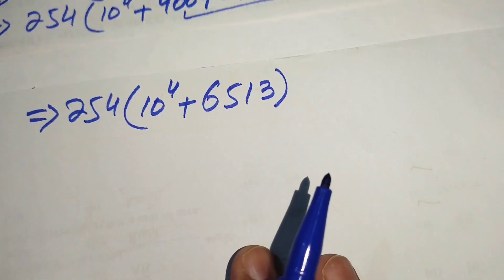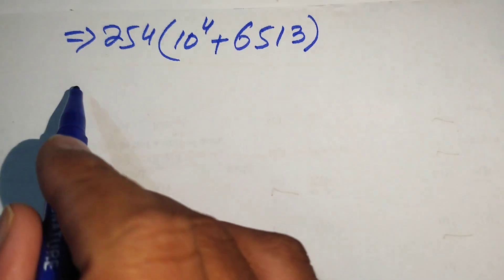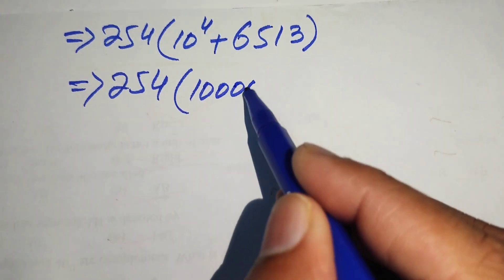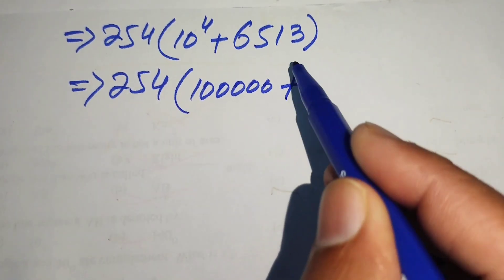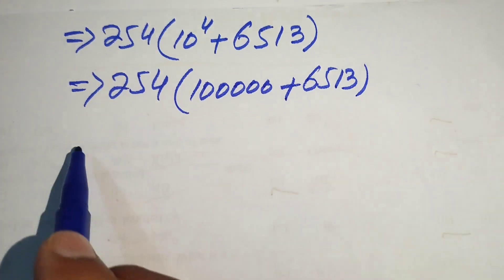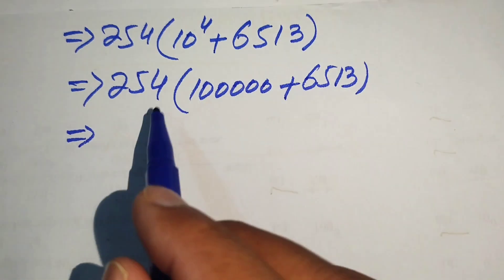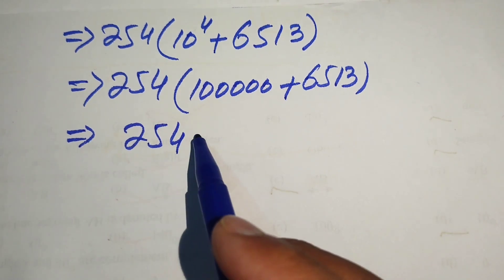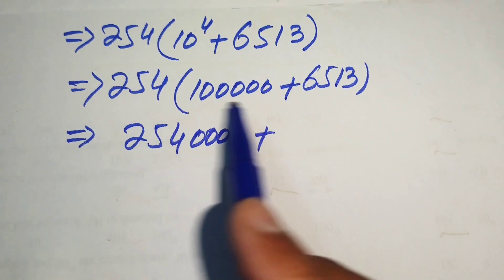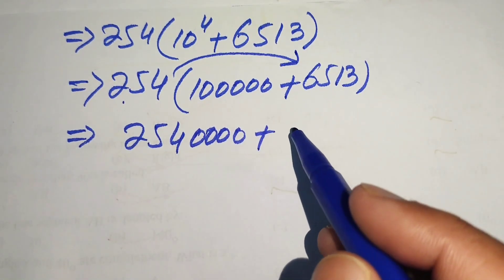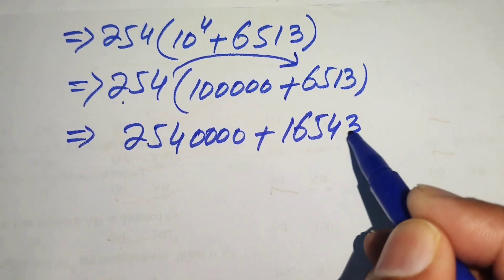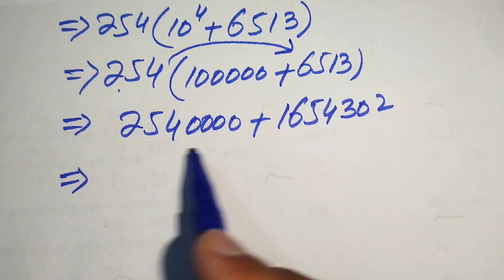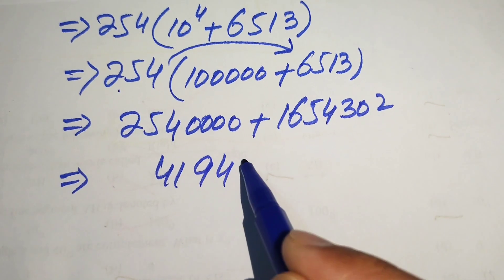We focus on 10 to the power of 4 and write the expression as 254 times 10 to the power of 4, plus 6530. Multiplying 254 by 10 to the power of 4 gives 2,540,000. Adding 1,654,302 and applying traditional addition gives us the final answer: 4,194,302.